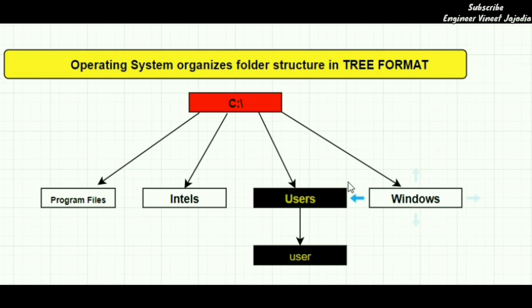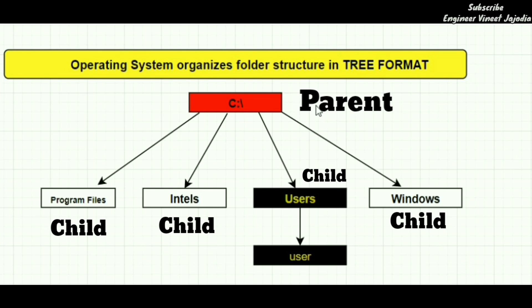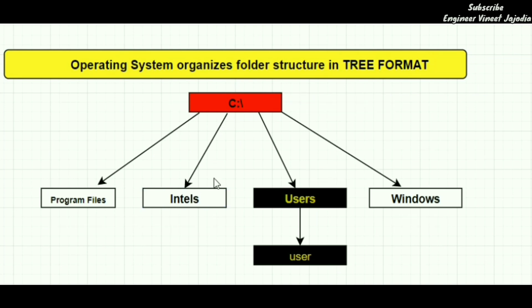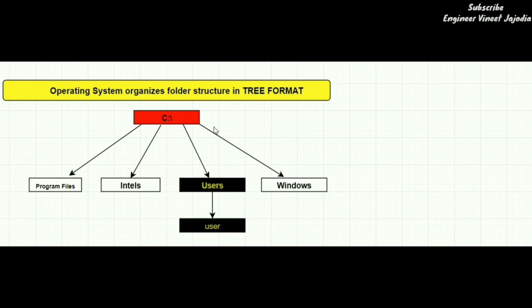Before understanding the topics — what is root directory, what is home directory, and what are absolute paths — we have to understand that our operating system organizes the folder structure in a tree format, meaning there will be a parent and there will be a child. So there will be a parent and child relationship between the folder structure.